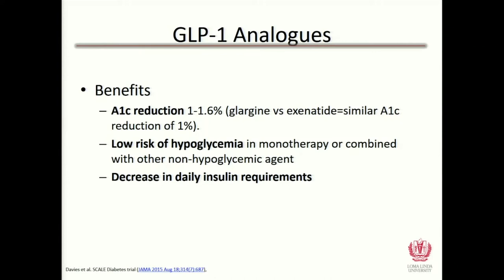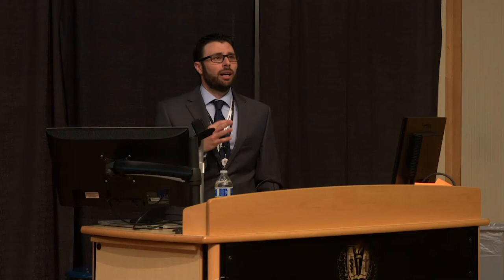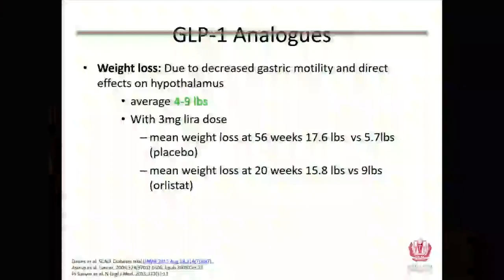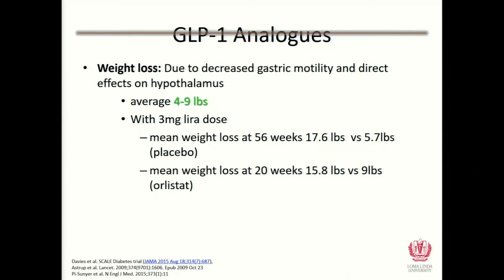GLP-1 analogs offer better A1C reduction — 1 to 1.6 percent reduction compared to SGLT2 inhibitors. By themselves they have low risk of hypoglycemia. What's great is they decrease daily insulin requirements. I've learned to automatically lower a patient's insulin by 20 to 25 percent when starting these, because reliably about two weeks later I'd get a call about low blood sugars. I also try to get patients off sulfonylureas as much as possible.